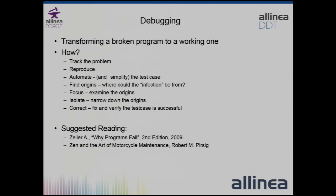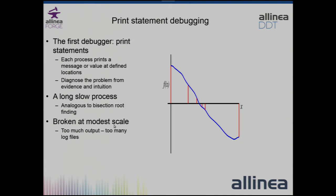Two recommended books: 'Why Programs Fail' by Andreas Zeller, and Robert Persig's 'Zen and the Art of Motorcycle Maintenance,' which is about debugging. Back to print statements - the printf debugger is the first thing we all know. You put messages at various points in your code, but it's too slow: with a bore bug you can't print after you've crashed. You're always putting statements here and there, either too far or not far enough to narrow it down. It can also cause Heisen bugs to disappear because inserting a print statement changes the memory layout.